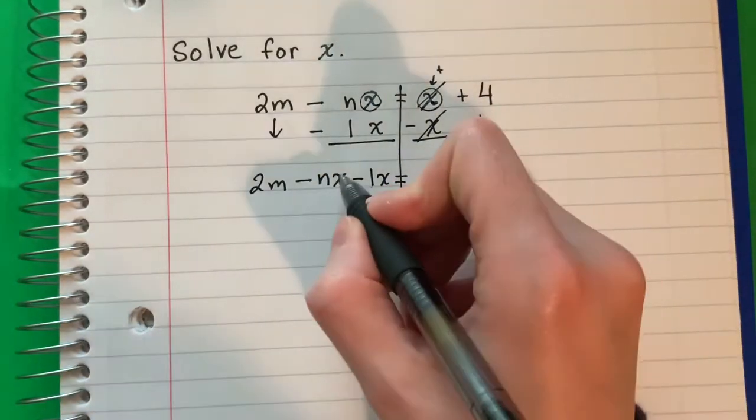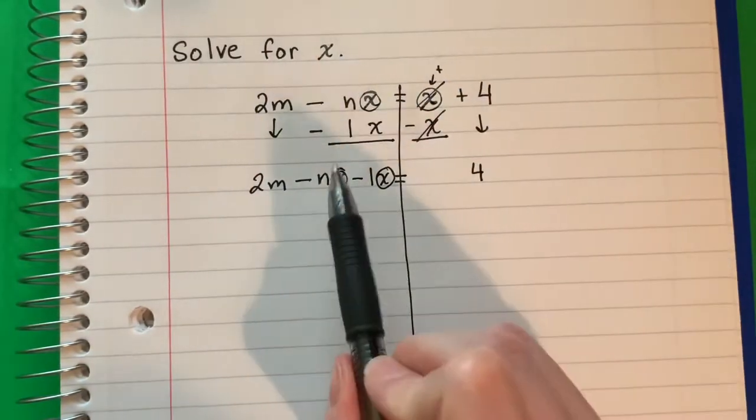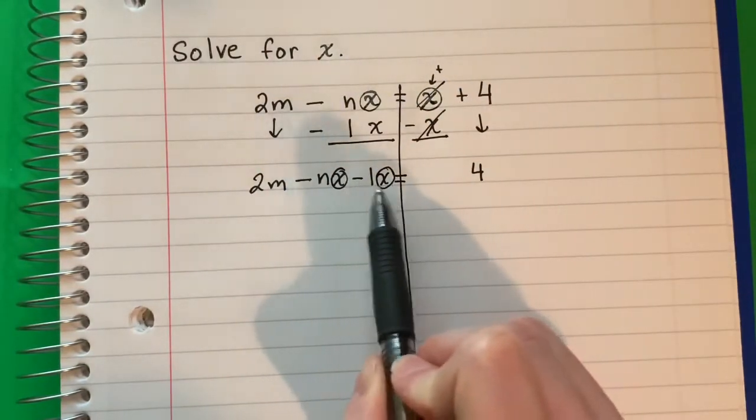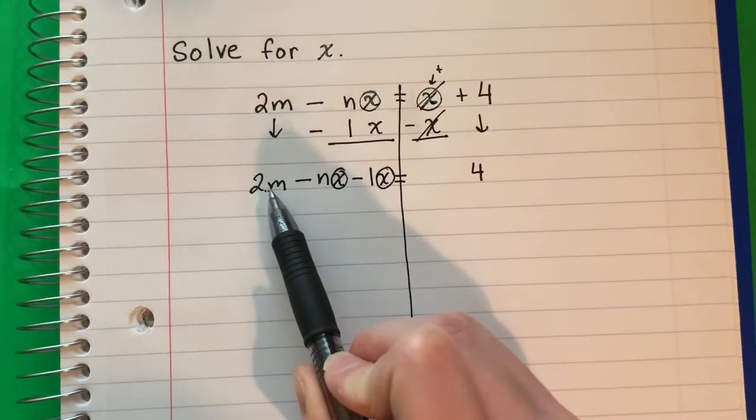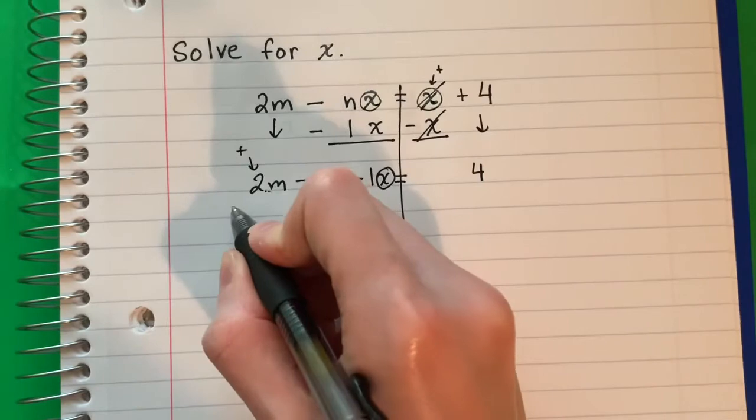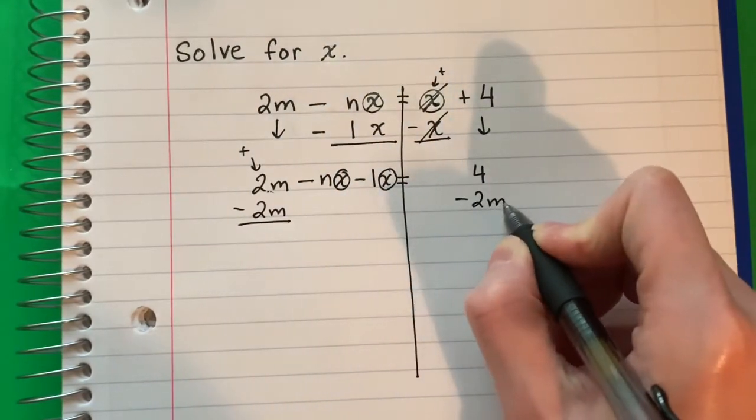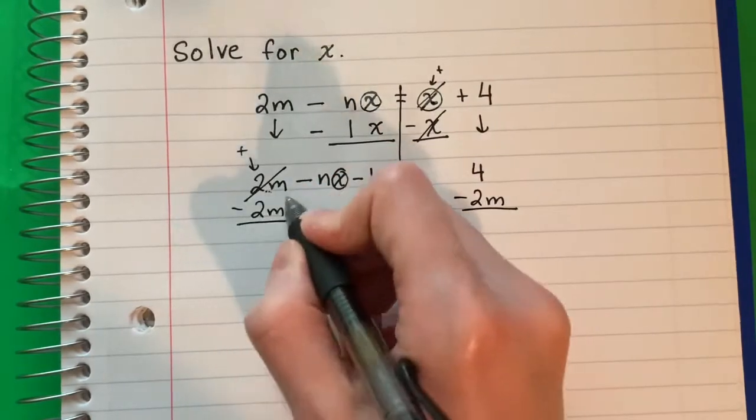I want the x's alone. I have two x's. I don't want to move my x's, I want to keep them on the left. So the only option right now is to move 2m. This is positive 2m. The opposite is negative so minus 2m. This cancels.